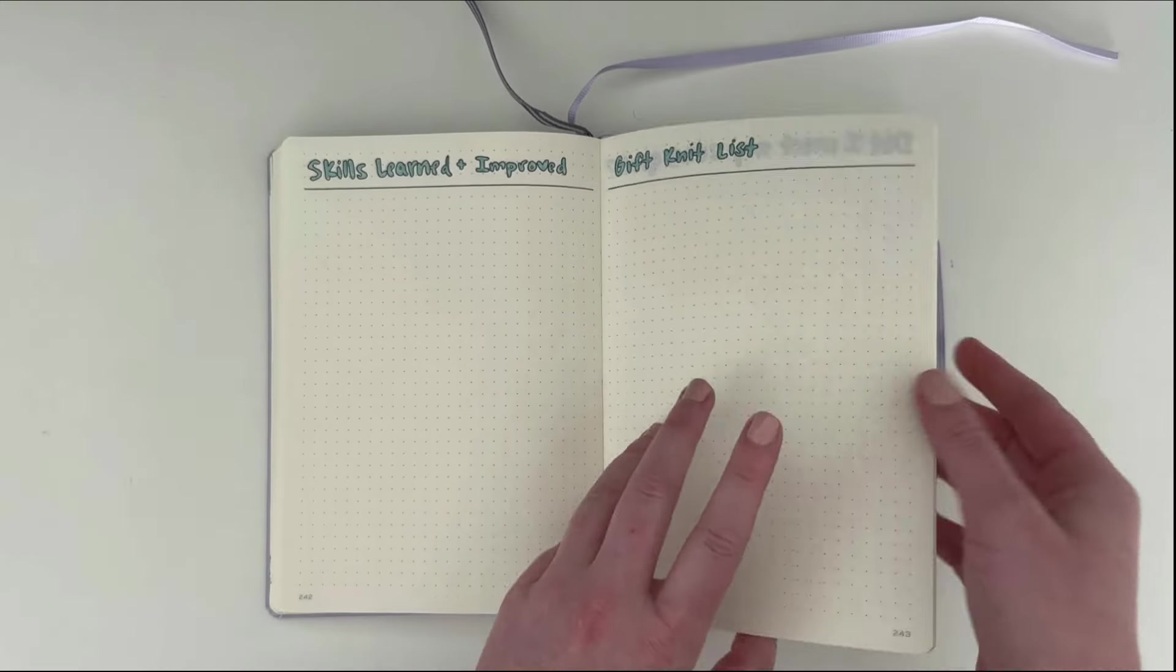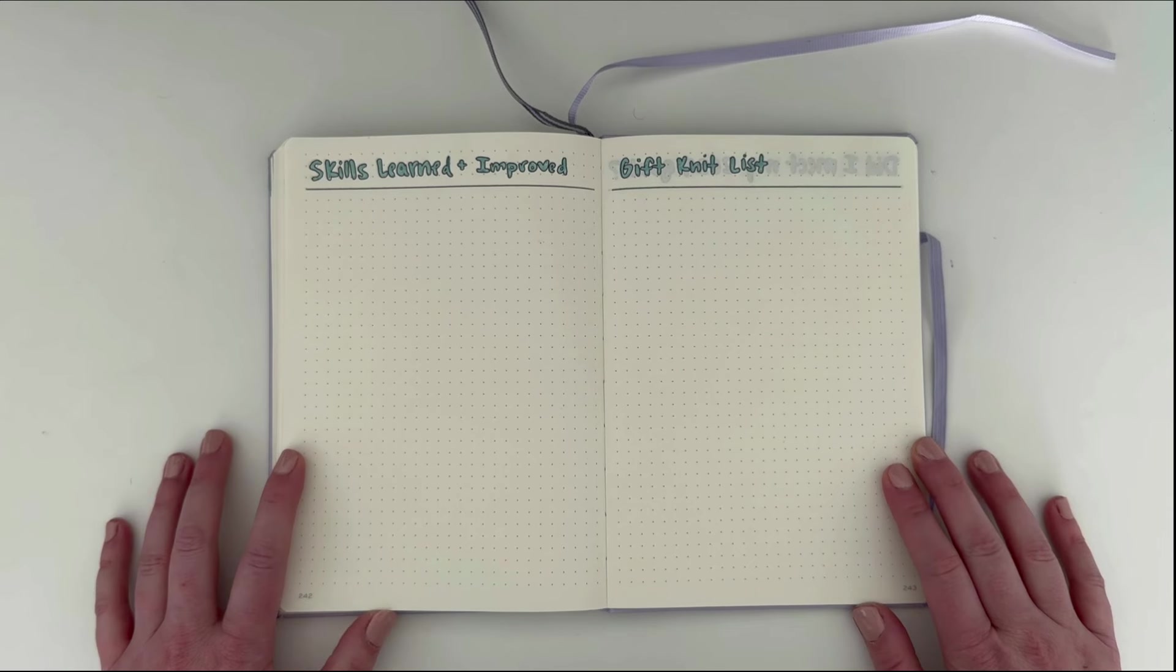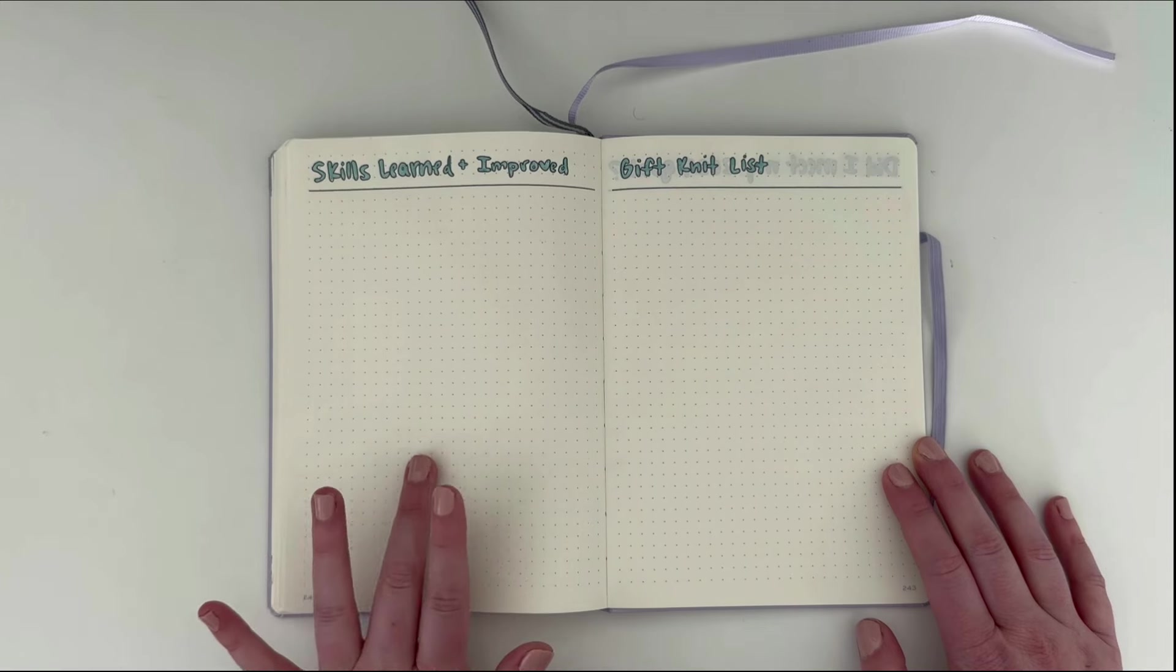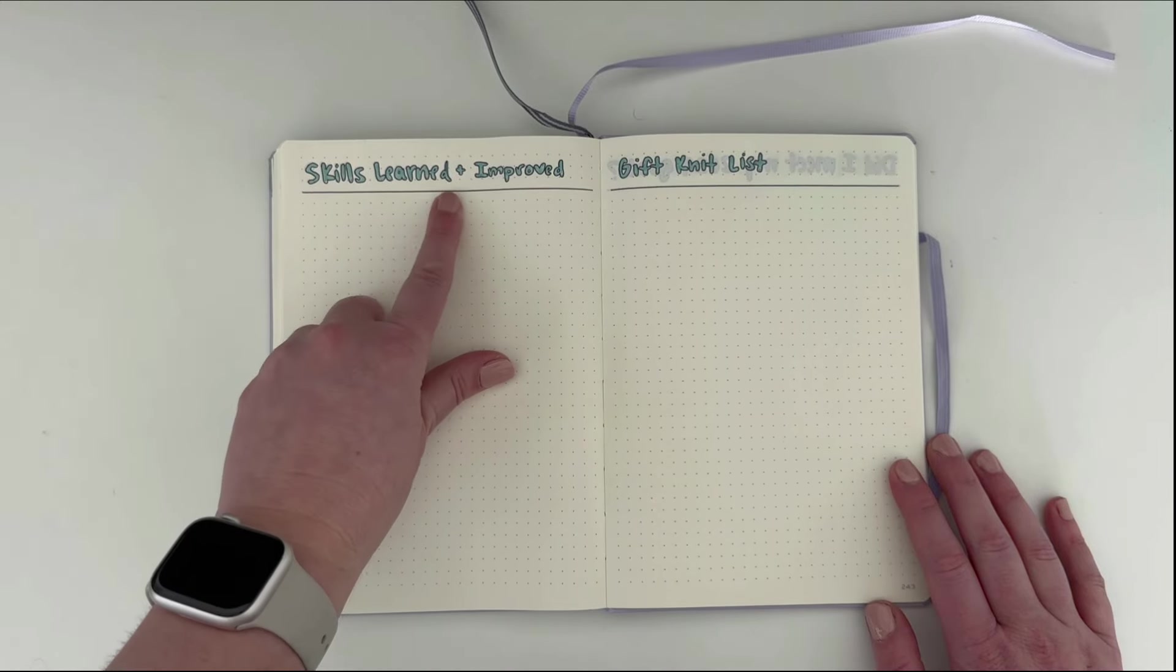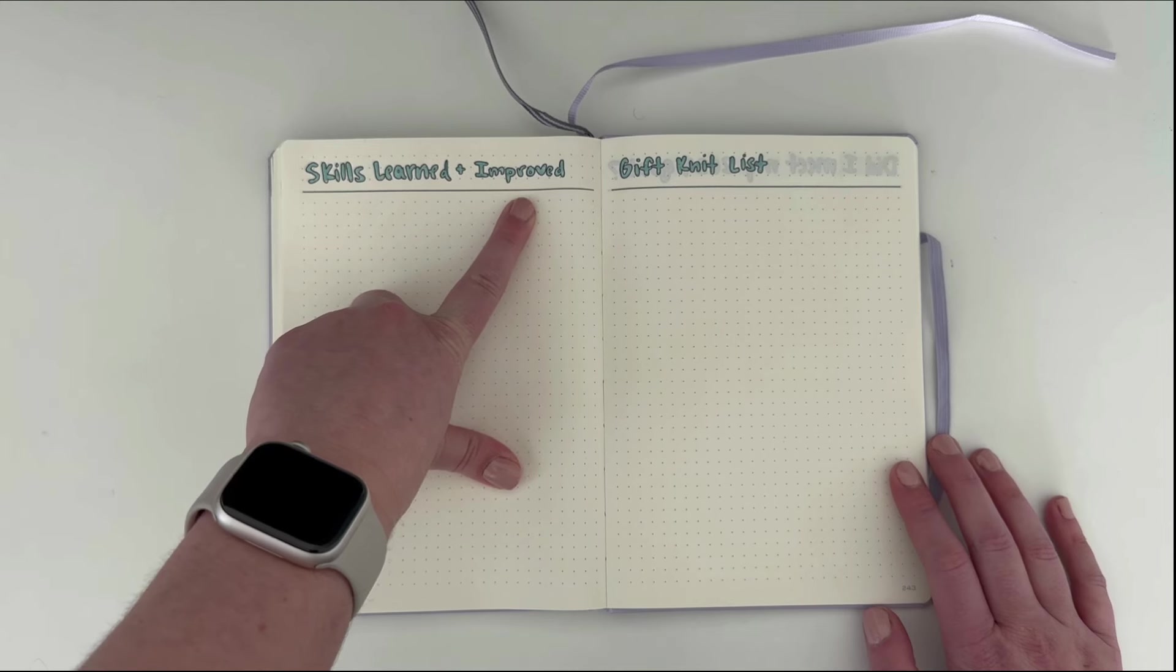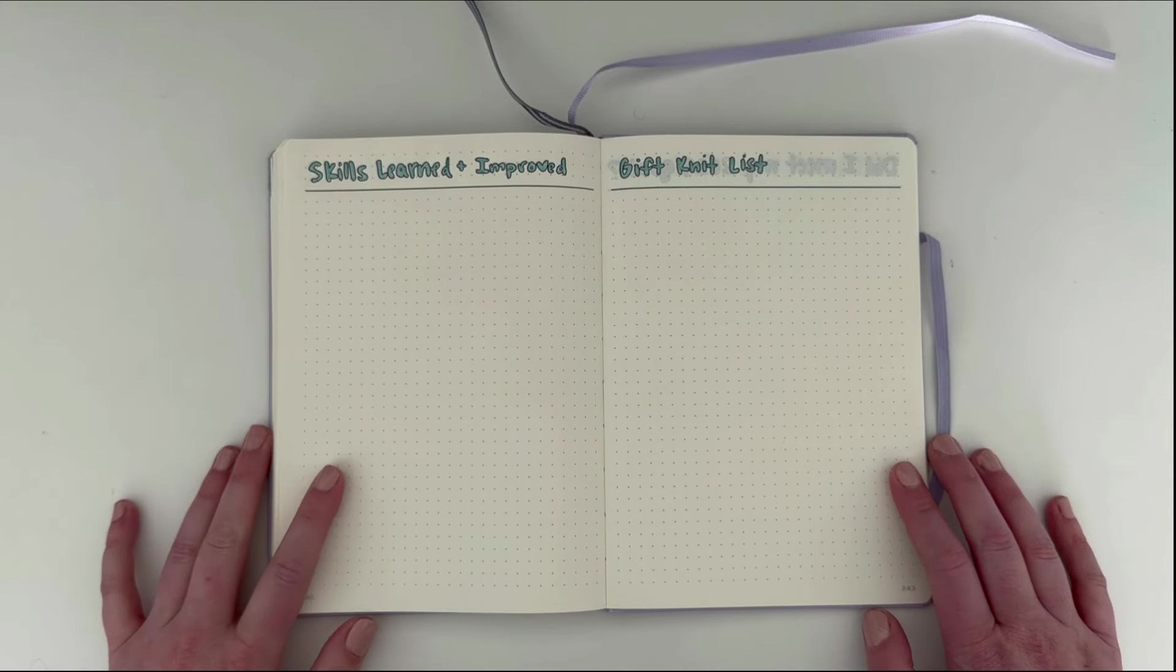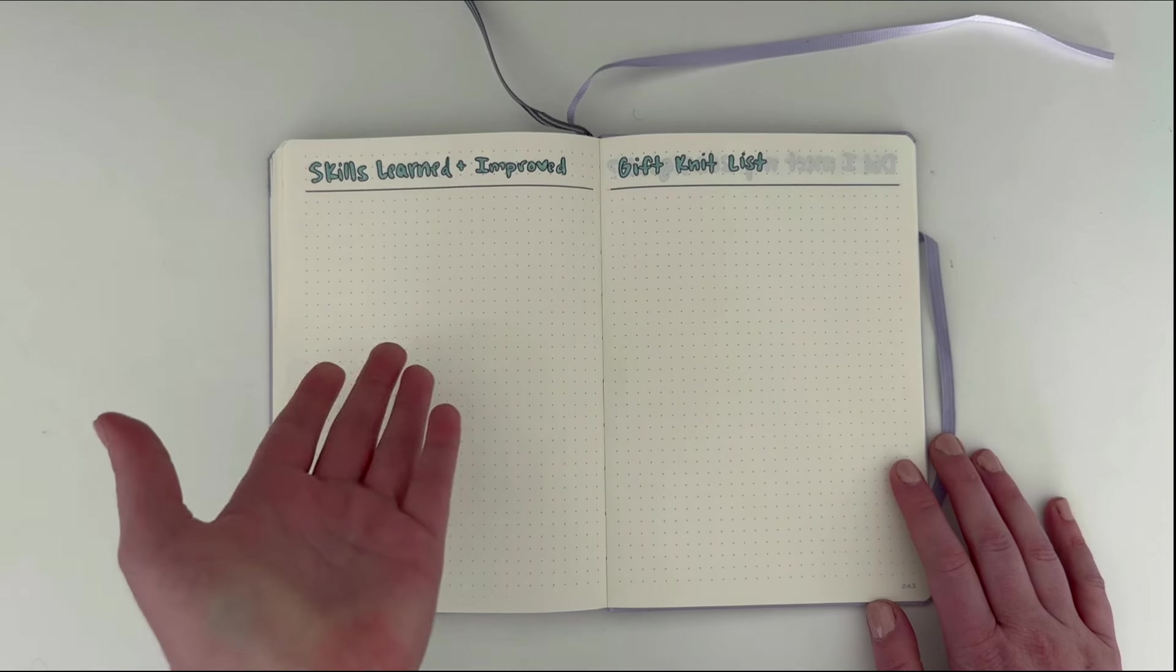And then last but not least, at the very end of my journal, I wanted to add a couple extra pages. It would have been nice to have these at the beginning, but these are all pages that I have since thought about and decided to add in since I completed the beginning of the journal. So they're ending up at the back of the journal. What I've got here are skills learned and improved. So this was actually an idea that someone left a comment on my last knitting journal video, and thank you so much for leaving that comment because I think this is a really good idea. So anytime I learn a new skill or I feel like I'm leveling up in any of my skills, I can keep track of that here.